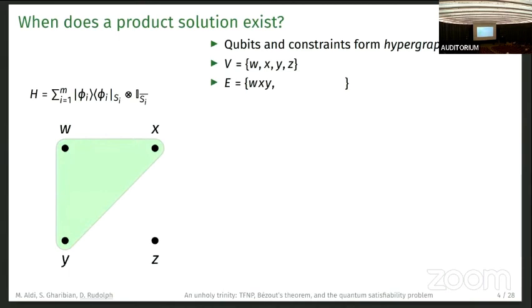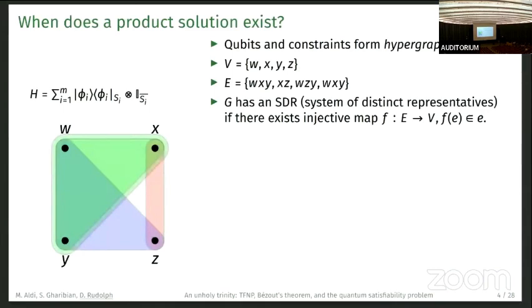For example, this is a three-local constraint, and then this forms the hyperedge W, X, Y. We can also have edges of different sizes. Here, a two-local constraint forms the edge X, Z. We can add another three-local constraint and can also have duplicate constraints to implement higher-rank projectors. Here we can have a rank-two projector on this set of three qubits.